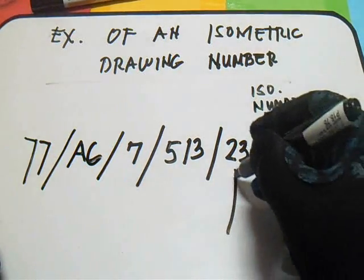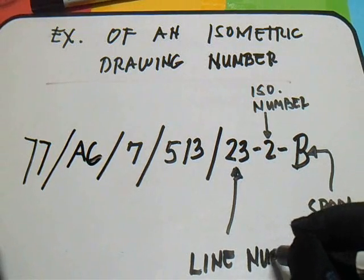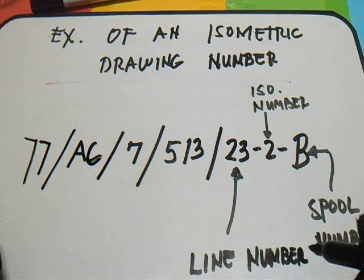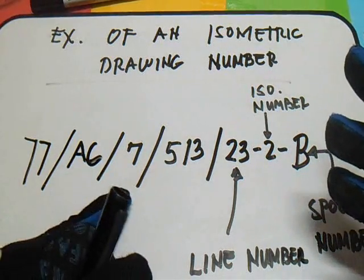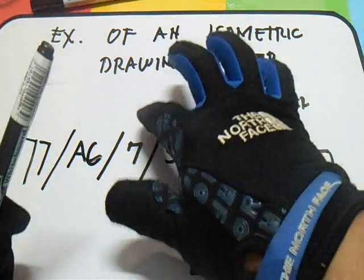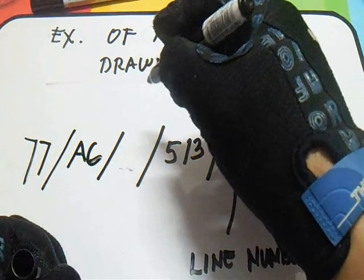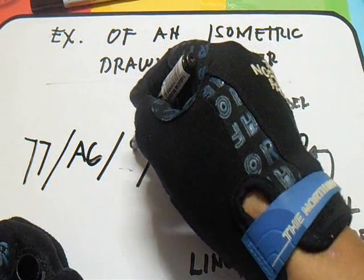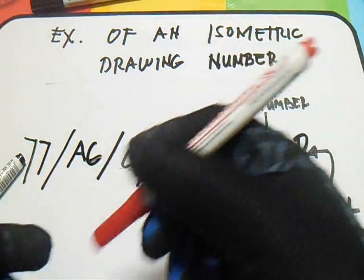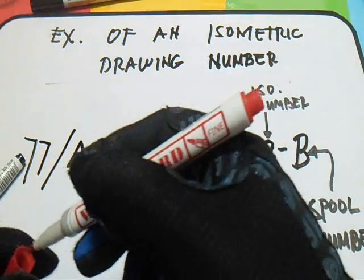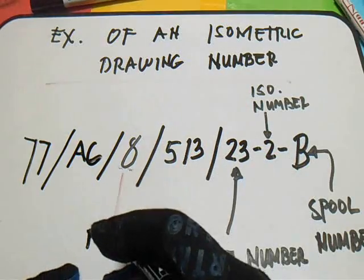So what is this 23? The 23 is the line number. And what is this 8? The 8 is the NPS — nominal pipe size. We don't normally use 7 for nominal pipe size, so let's use 8. This 8 is the NPS or nominal pipe size.